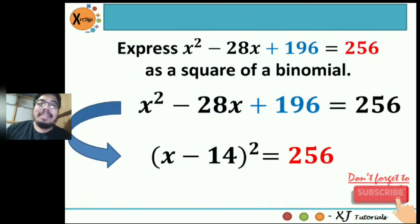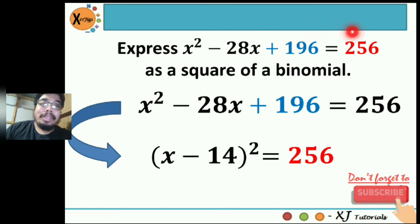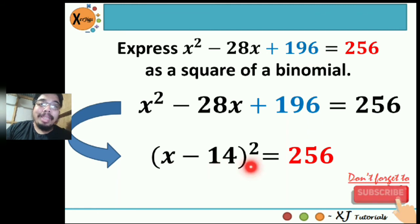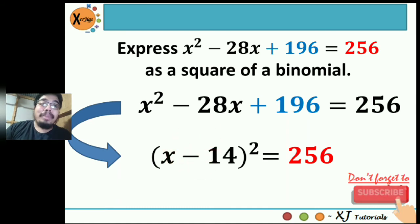After this, we express the equation as a square of a binomial. The technique is to get the square root of the quadratic term and the constant term. The square root of x squared is x, and the square root of 196 is 14. Since the linear term is negative, we follow the sign. Therefore, the binomial is quantity x minus 14 squared equals 256.